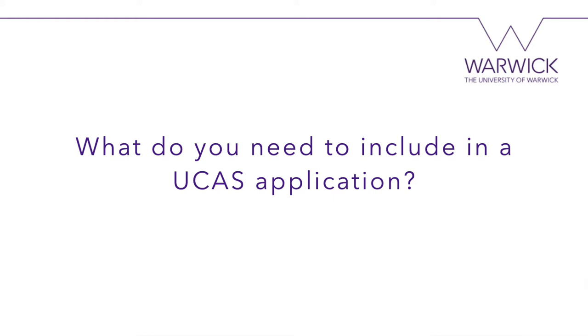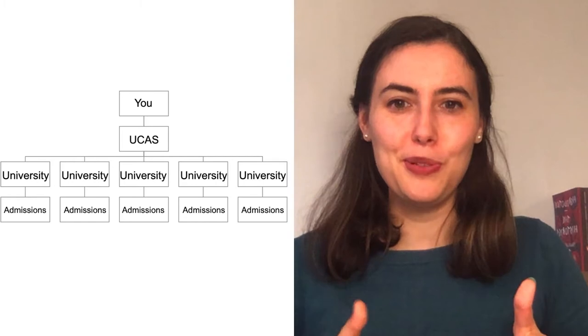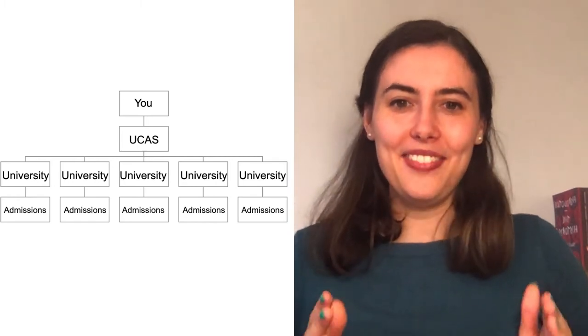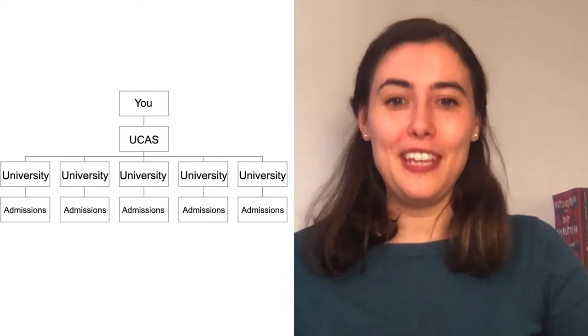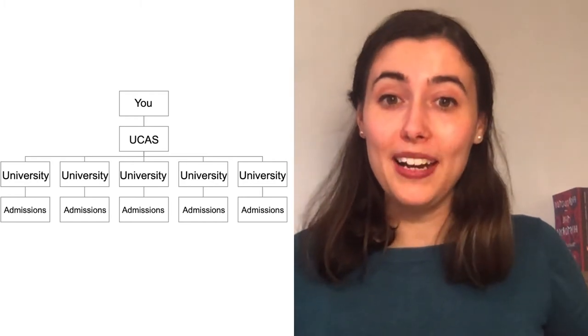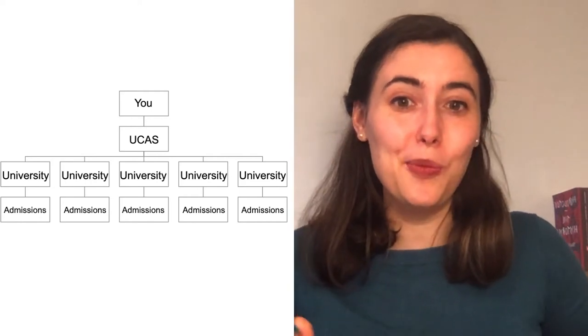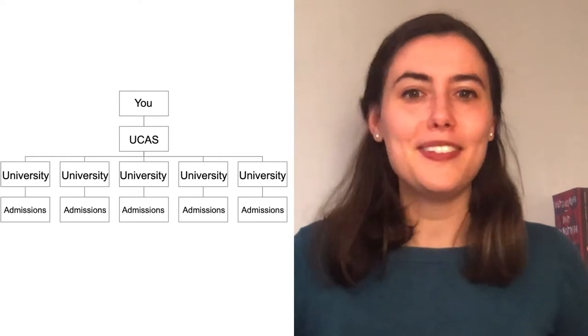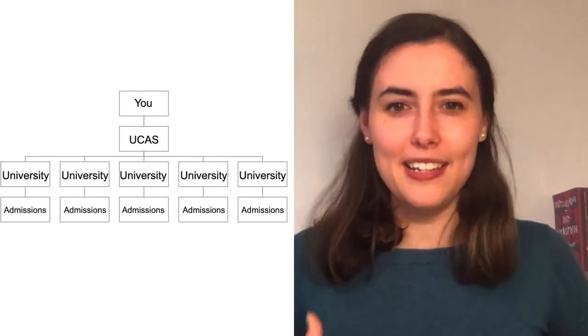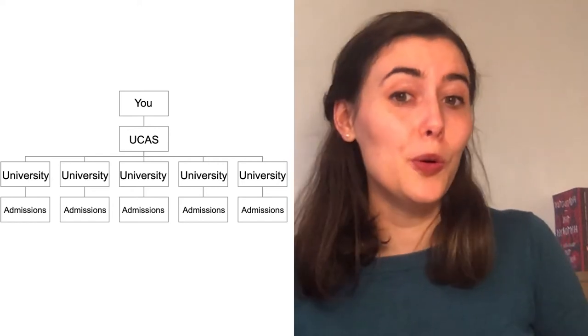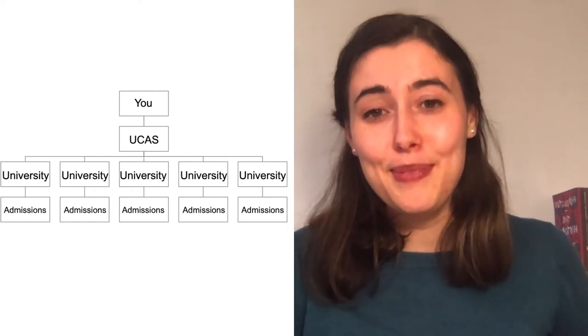What do you actually need to include in a UCAS application? Essentially, you submit one application which is sent to up to five different university options. When this application is received by the university, at Warwick it is read and assessed by a course selector — someone based in the department you're applying to — and also by central admissions tutors, who are professionals in admissions.